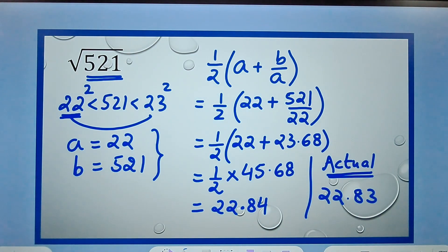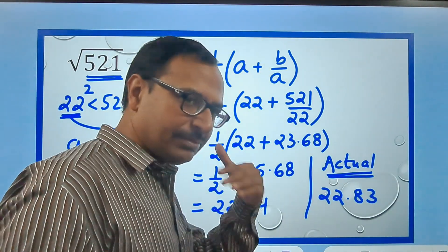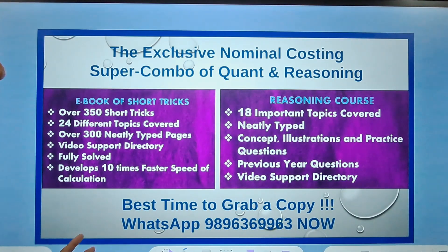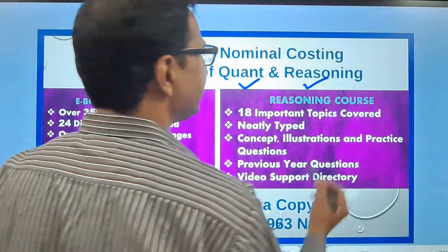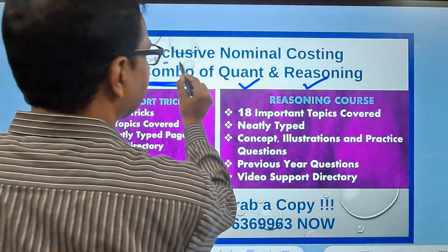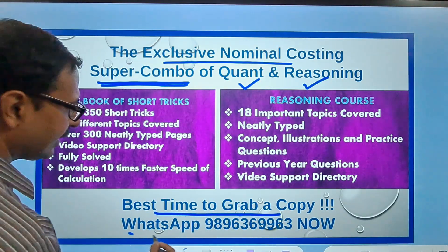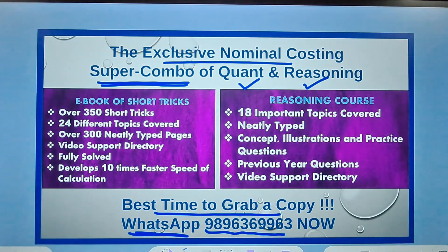We'll be taking up some big numbers also in the same video. But I want you to know that all these tricks which I am telling you are a part of our super combo of quant and reasoning, which currently we are giving at a very exclusive nominal costing offer. This is the best time to grab a copy. You can send me a message on WhatsApp 9896369963, but be willing to invest little bit on your education.